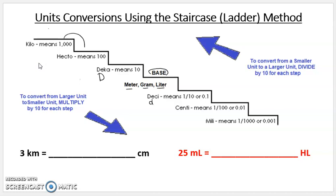By 10 to the first, 10 to the second, 10 to the third, 10 to the fourth, and then 10 to the fifth. So we've gone down five steps from kilometer to centimeter, and that is 10 to the fifth. When you go down from a larger unit to a smaller unit, you multiply. So to convert from kilometers to centimeters, we're going to take 3 kilometers.